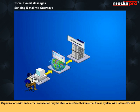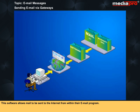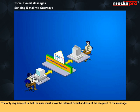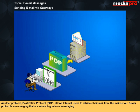Organizations with an internet connection may be able to interface their internal email system with internet email. Most popular commercial email programs like Microsoft Mail and CC Mail require special software to interface with internet email. This software allows mail to be sent to the internet from within their email program. The only requirement is that the user must know the internet email address of the recipient. Simple Mail Transfer Protocol or SMTP is the protocol on the internet for transporting messages from one email system to another. Another protocol, Post Office Protocol, POP, allows internet users to retrieve their mail from the mail server. Newer protocols are emerging that are enhancing internet messaging.